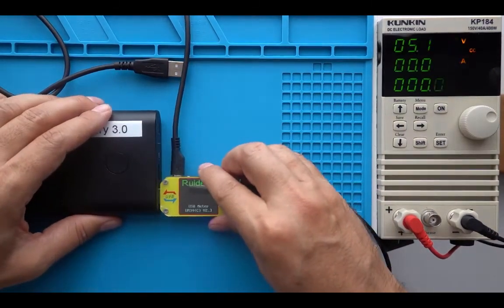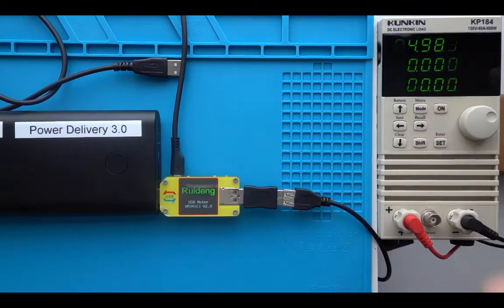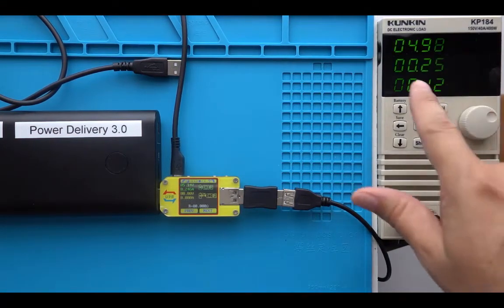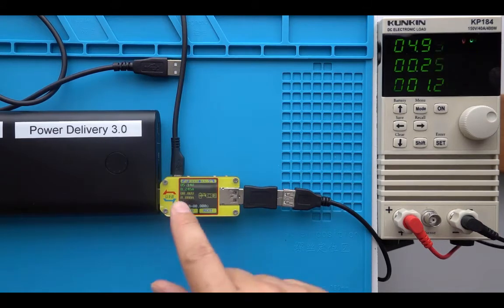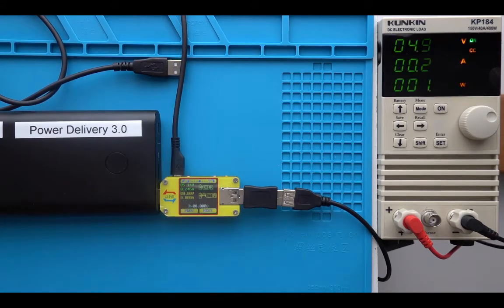Let's plug this in directly and turn on the load. Here you can see we have about 5 volts and 250 milliamps that is being drawn, and here we measure 5.14 volts at the power bank and 245 milliamps.